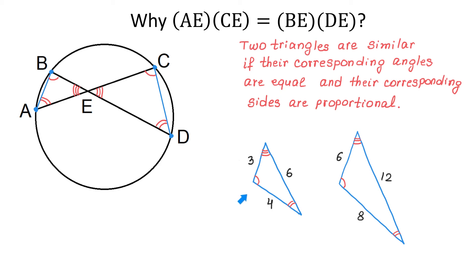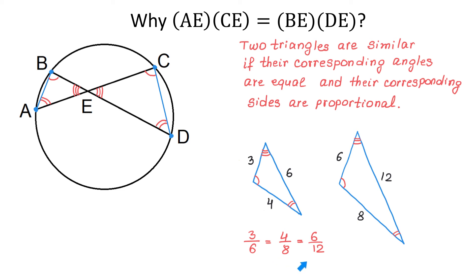And again, these sides are proportional. Let the first triangle have sides of lengths 3, 4, and 6, and the second one 6, 8, and 12. Then, 3 divided by 6 is the same as 4 divided by 8, and that is the same as 6 divided by 12. So 3 over 6 equals 4 over 8, equals 6 over 12. Each of these ratios is one half.